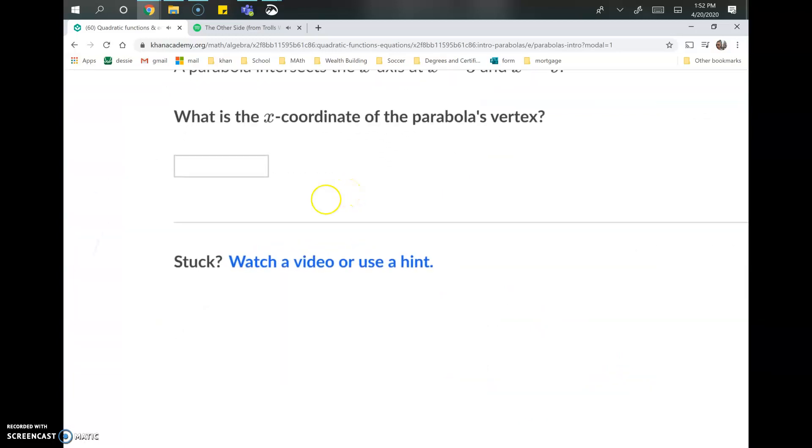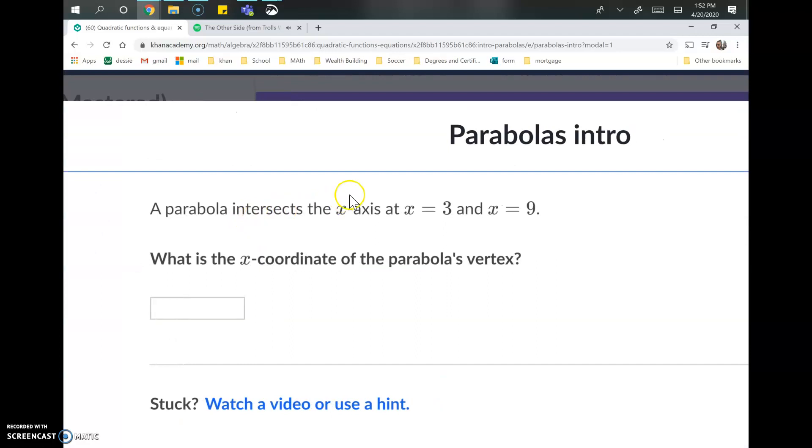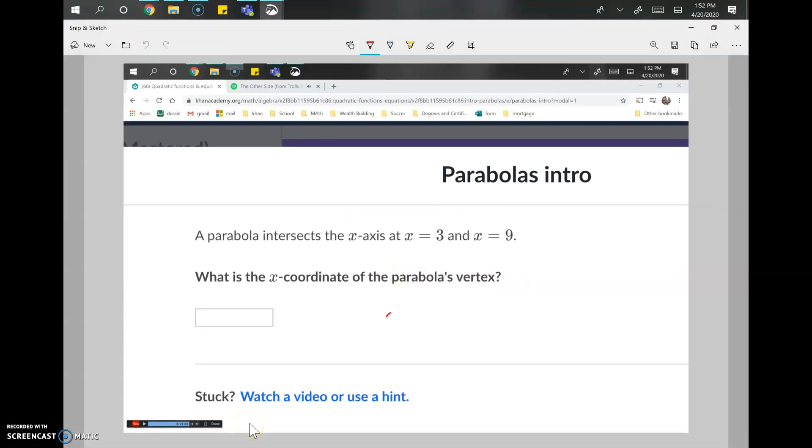Last question: a parabola intersects the x-axis at 3 and 9. What is the x-coordinate of the parabola's vertex? Similar to the last question, we know that the x value for the vertex is going to be halfway between two points that are in line with each other. Between 3 and 9, we're looking for this halfway point. An easy way for me to figure out the halfway point is to take 9 and subtract 3 from it.